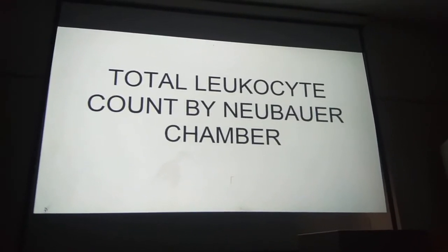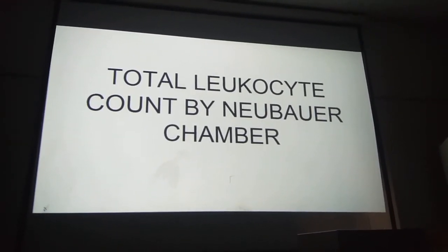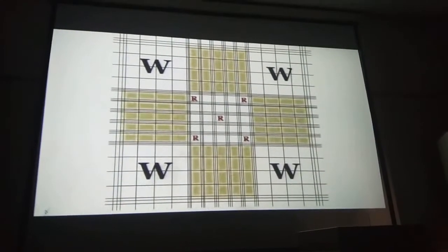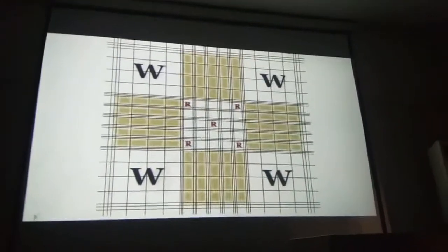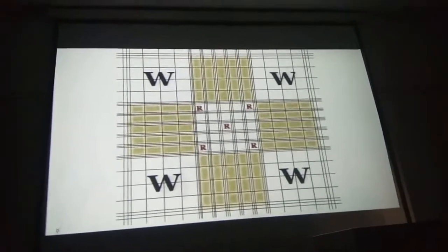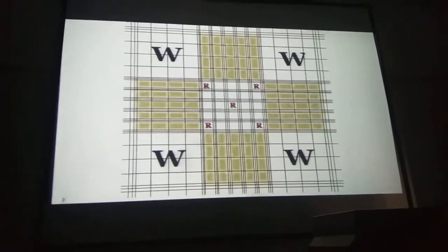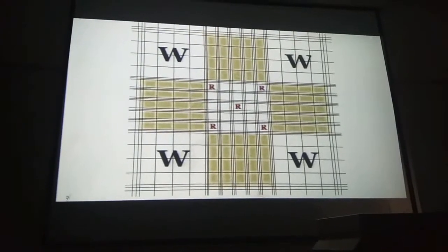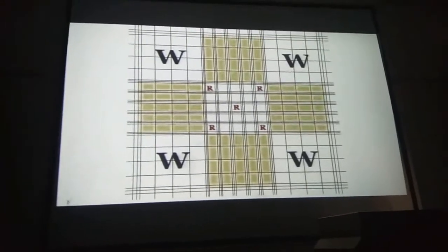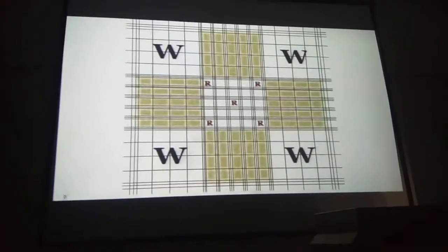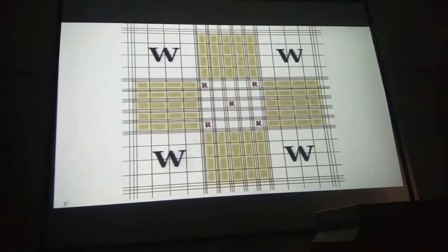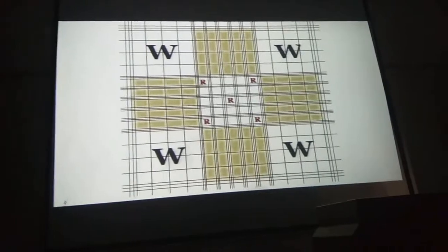We will see in which boxes of the Neubauer chamber the leucocytes are counted. The central area of the Neubauer chamber is for RBC count, and for WBC count the boxes used are the 4 corner boxes where the capital W is written. In these 4 corner boxes, the WBCs are counted under the microscope.